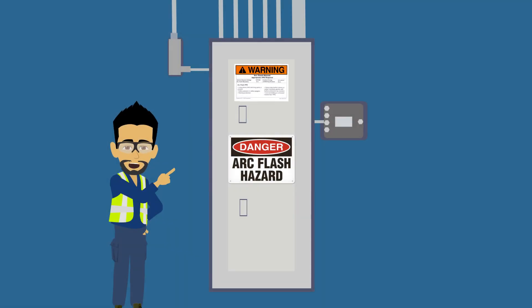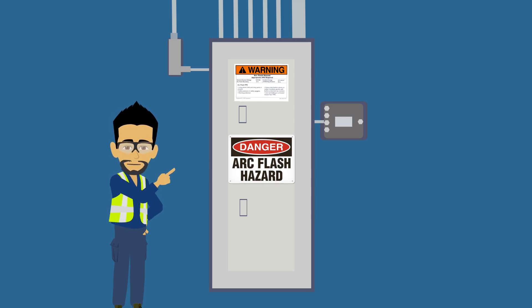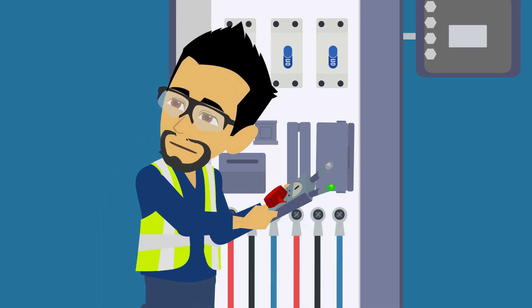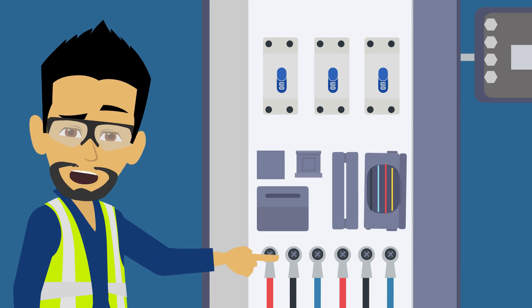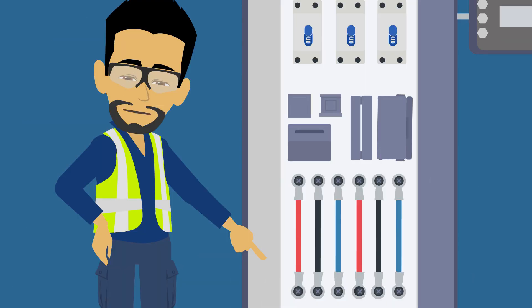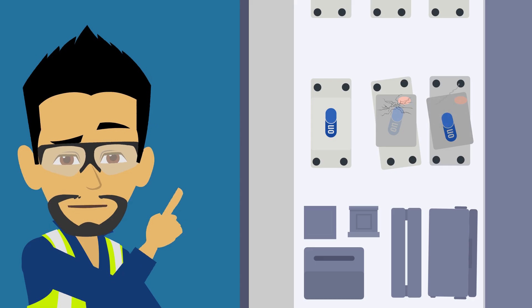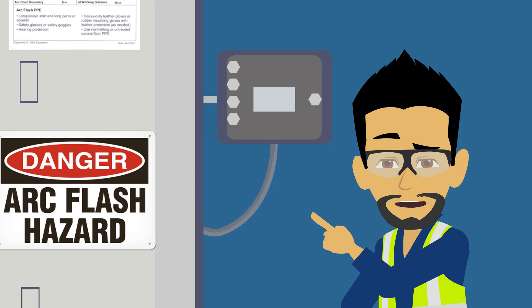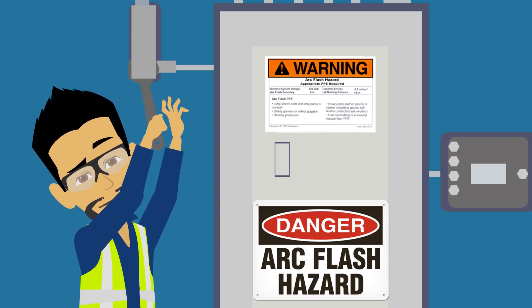Arc flashes can best be avoided by exercising caution wherever electricity is used, particularly around high voltage panels and equipment. They are commonly caused by carelessness, worn or broken conductor insulation, exposed live components, loose wires and connections, improperly maintained switches and circuit breakers, high voltage cables, static electricity, or damaged tools and equipment.